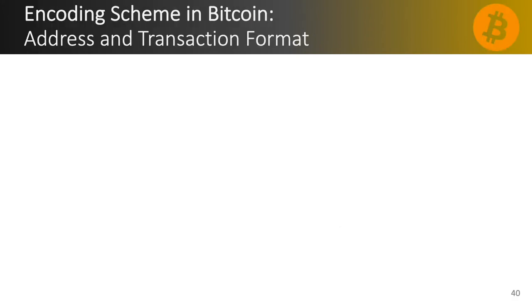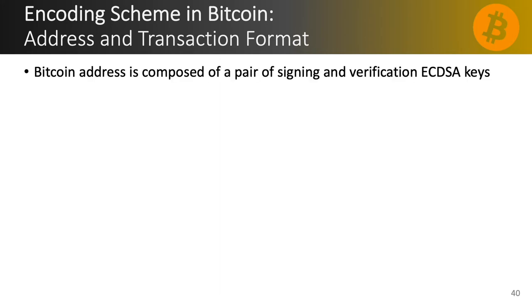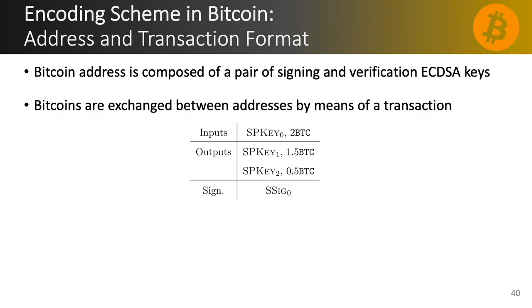We begin by giving an overview of the format of the Bitcoin address and transactions. A Bitcoin address is made of a pair of verification and signing ECDSA keys. Bitcoins are exchanged between addresses by means of a transaction and, in the simplest form, a transaction transfers a certain amount of coins from one or many input addresses to one or many output addresses. Here we see an example of a transaction with one input holding two Bitcoins and two outputs that will hold one and a half and half a Bitcoin each after the transaction finalizes.